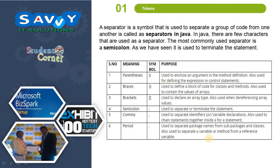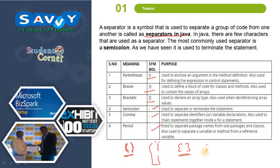The last token type is separators. A separator is a symbol used to separate groups of code from one another. In Java, the most commonly used separator is the semicolon, which terminates statements. There are also three types of brackets: parentheses, braces, and square brackets. Other separators include the comma and the period (dot). Parentheses separate function arguments, curly braces separate blocks of code, square brackets represent array parts, semicolons represent statement ends, commas separate variables, and the dot represents the class-object relationship.